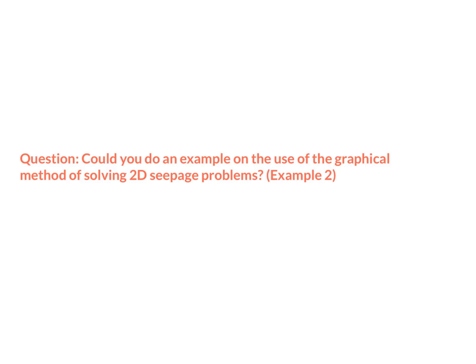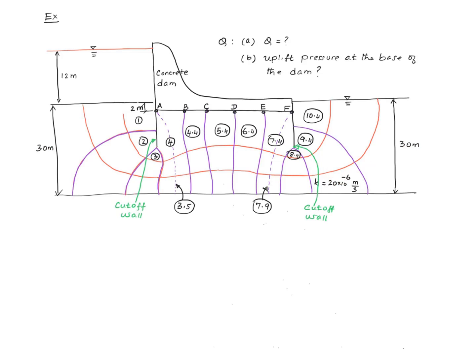The question is: could you do an example on the use of the graphical method of solving 2D seepage problems? Here I have a concrete dam with two cut-off walls, one near the upstream side and another near the downstream side. I'm interested in calculating Q and the uplift pressure distribution along the base of the dam. The picture has an approximate flow net.